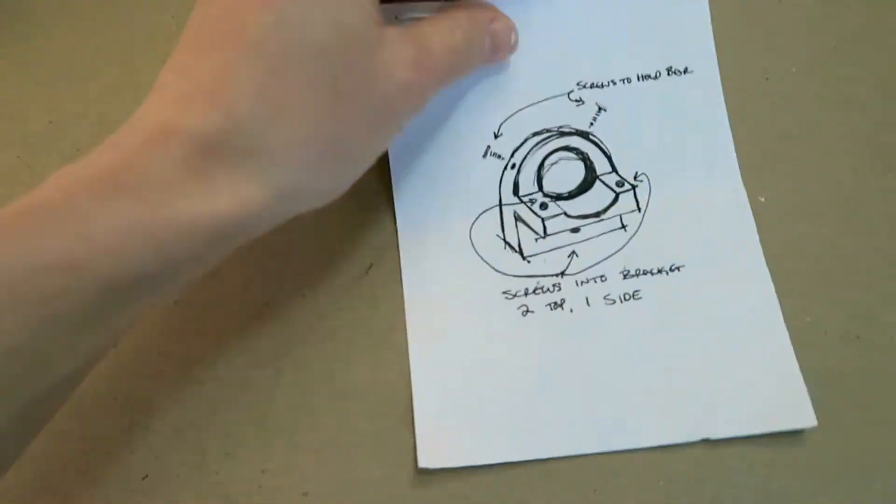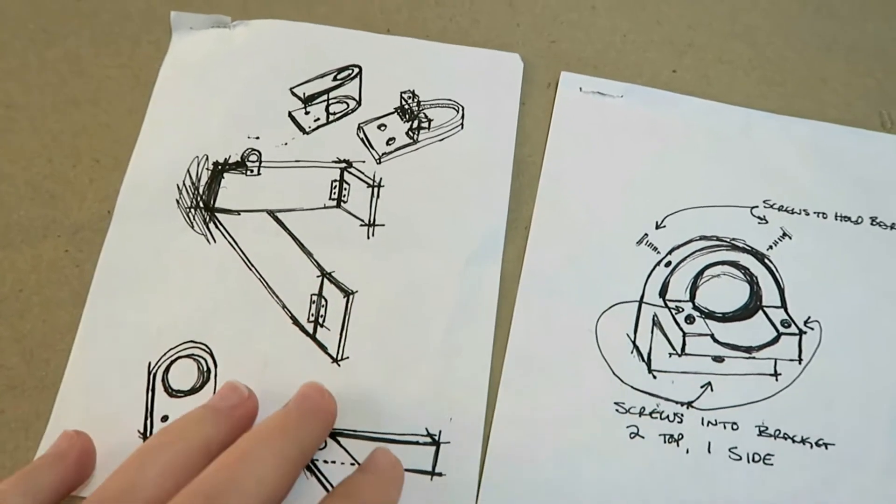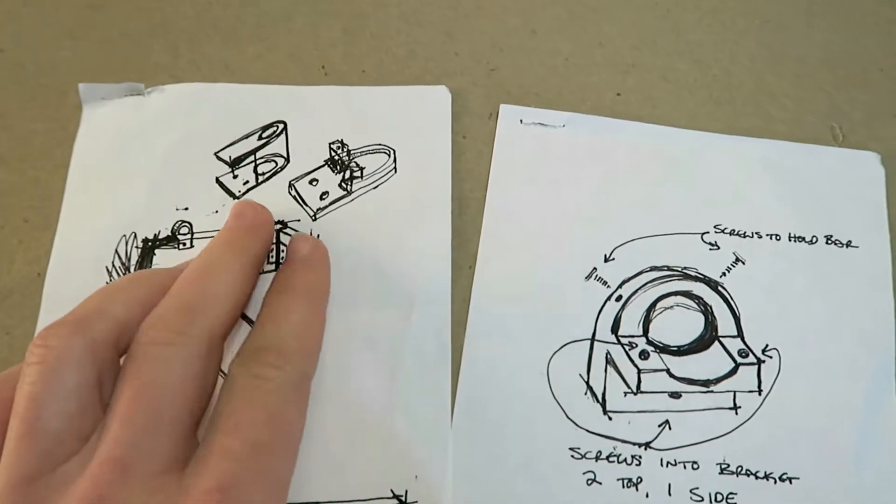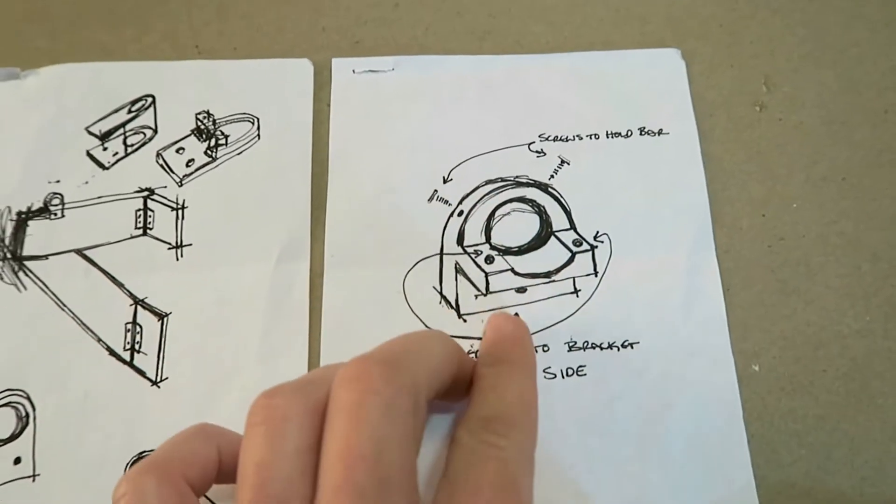Specialized brackets can get pricey and may not have the look you want, so let's design and print one from scratch. This bracket setup will hold a balancing bar for ballet practice, but you can adapt the idea for any type of bracket you need.